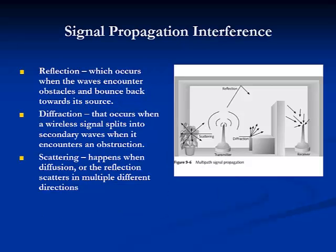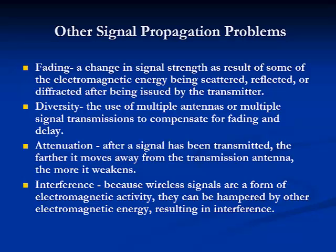Problems with wireless signal propagation include reflection, which occurs when the waves encounter obstacles and bounce back toward their source. Diffraction occurs when a wireless signal splits into secondary waves when it encounters an obstruction. And scattering happens when diffusion or reflection scatters in multiple different directions. Other problems include fading, which is a change in signal strength as a result of electromagnetic energy being scattered, reflected, or diffracted after being issued by the transmitter. Diversity is the use of multiple antennas to compensate for fading or delay.